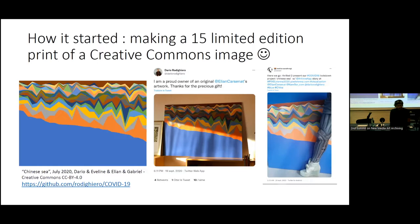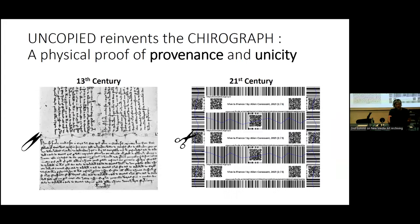We brainstormed on this idea, and in the end we used the technology from the 13th century called the Kirograph. The idea is you take a sheet of paper, you write the same contract three times, then you cut it. Two people go with one copy of the contract and the third party keeps it as proof of the authenticity of the contract.